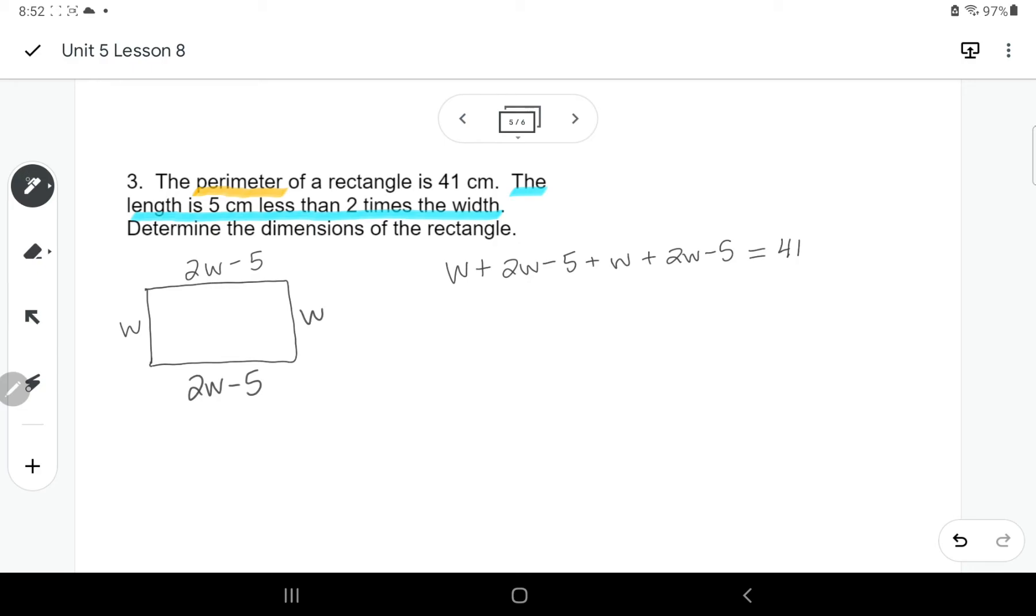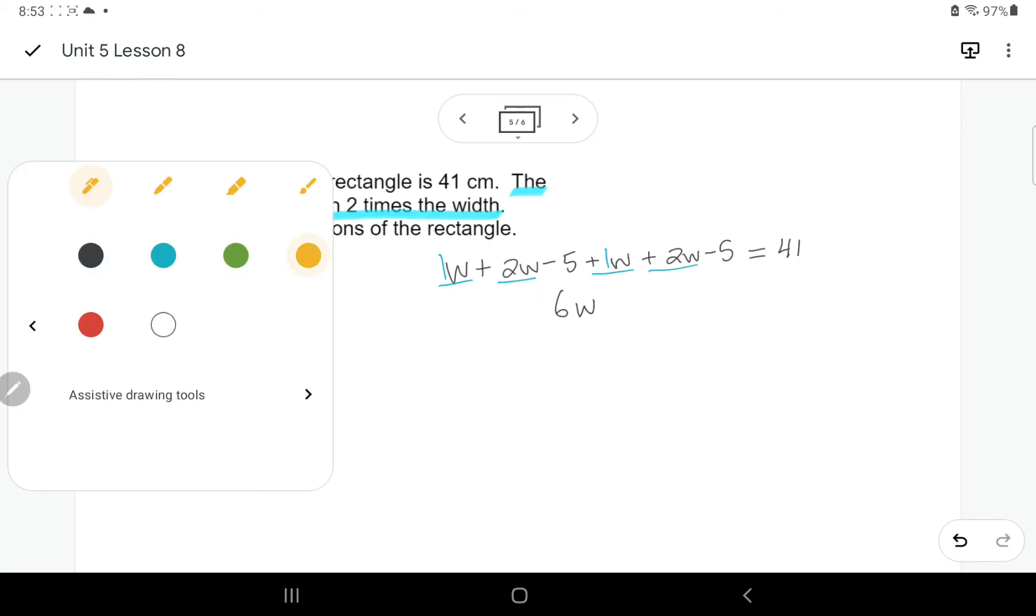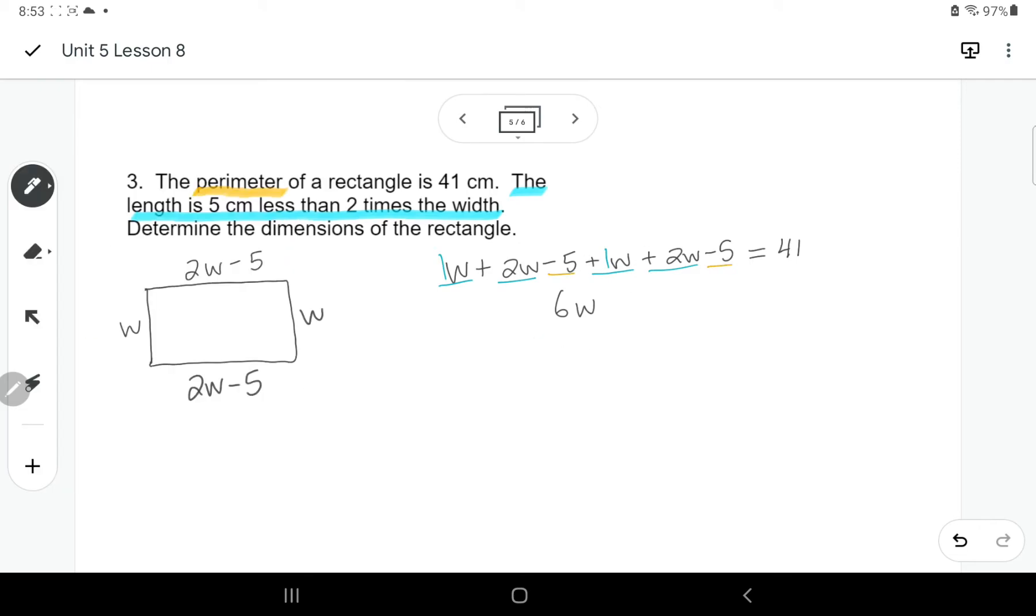This looks like a really big equation, but it's not so bad at all if you spot your like terms. So I've got W, 2W plus W plus 2W. Remember that the W by themselves count as one. So all together, I have 6W. And then the number parts, I had minus 5 and then minus 5 again. So that's minus 10 equals 41. So opposite operations, I'm going to add 10.